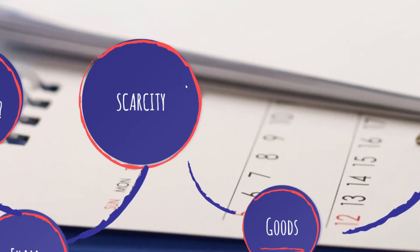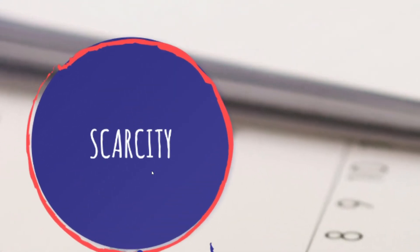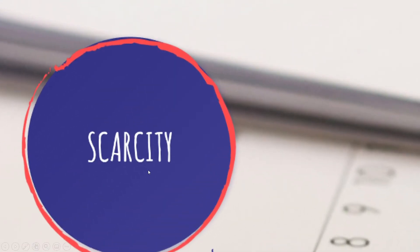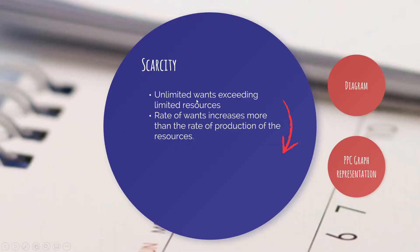The first topic is scarcity. It's not just the everyday meaning — we need to learn it in economic terms. Scarcity is unlimited wants exceeding limited resources. For a more elaborate answer, we can also write that the rate of wants increases more than the rate of production of resources.